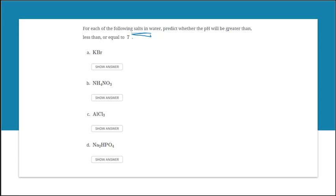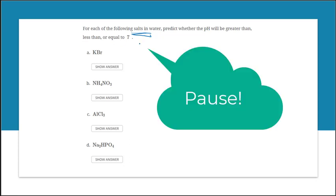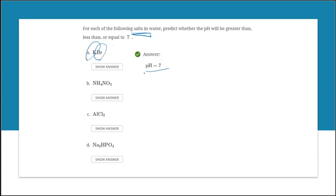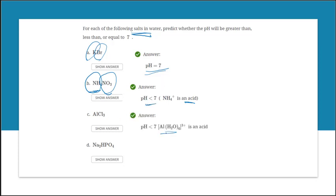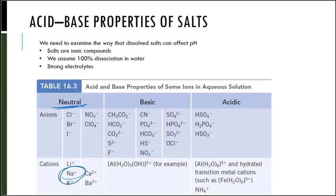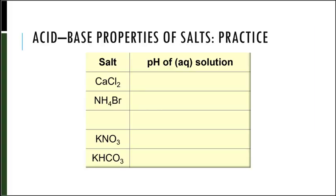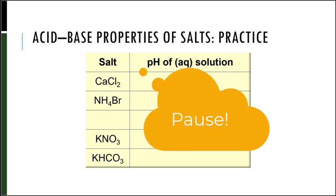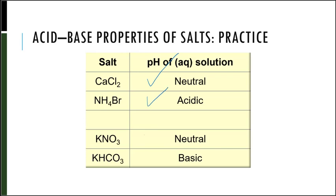Look up these salts and predict whether the pH will be greater than, less than, or equal to 7. K⁺ and Br⁻ are both neutral, so KBr gives pH = 7. NH4⁺ makes it acidic and NO3⁻ is neutral, so NH4NO3 gives pH less than 7. For AlCl3, aluminum makes it acidic and chloride is neutral. For Na2HPO4, sodium is neutral and HPO4²⁻ makes it basic, so pH greater than 7. Also: CaCl2 is neutral, ammonium bromide is acidic, potassium nitrate is neutral, and sodium carbonate is basic.